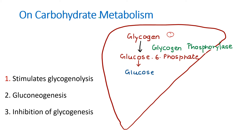The second action of glucagon is that it increases the amino acid uptake and converts them into glucose. This process is known as gluconeogenesis, and that is the second action of glucagon.